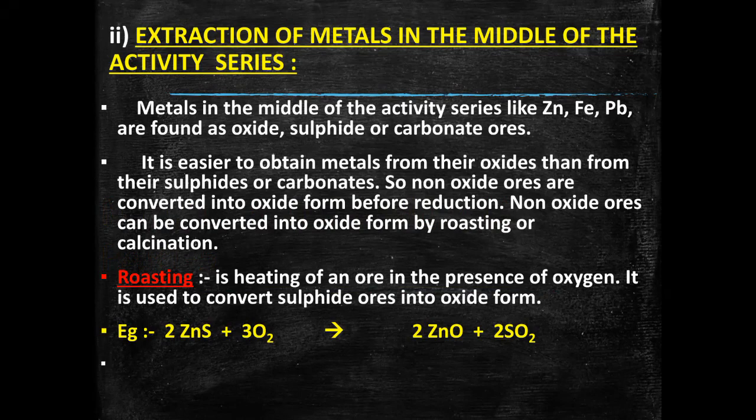These metals are found as oxide, sulfide, or carbonate ores. Metals are easier to extract from their oxides, which is achieved by reduction of the metal oxide. The sulfide ores and the carbonate ores are also first converted into oxides and then reduced to extract the metal. In the last session we used the terms roasting and calcination.